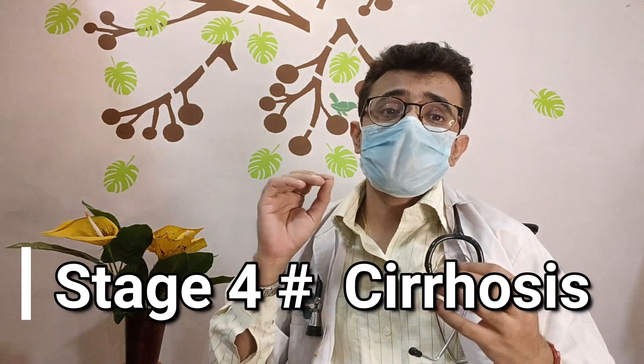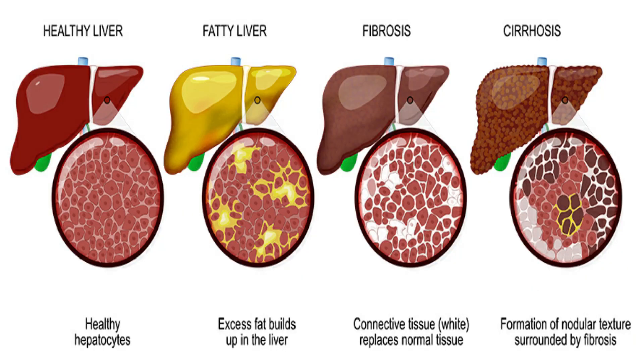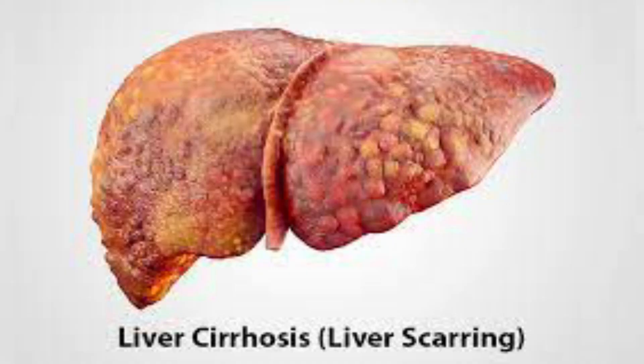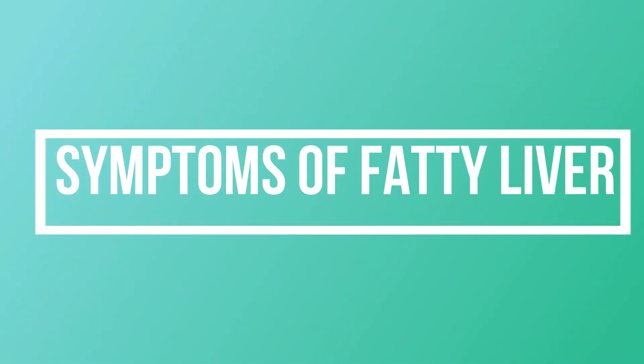Then comes Stage 4, which is called cirrhosis. In cirrhosis, liver cells are replaced by bands of scar tissues; the liver contracts and gets hardened. Due to cirrhosis, the patient can develop serious complications like liver failure and liver cancer.